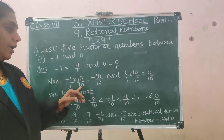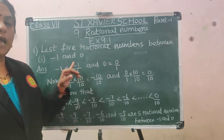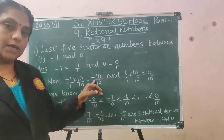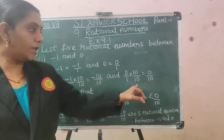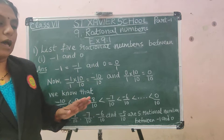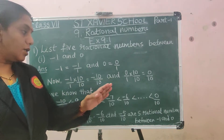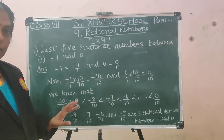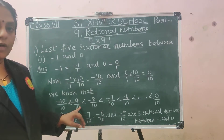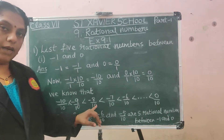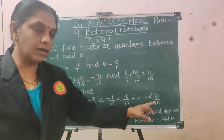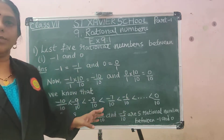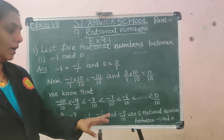We multiply both the numerator and denominator by 10, giving minus 10 by 10 and 0 by 10. Now write numbers between 0 and minus 10: minus 9 by 10 becomes 0.9, then minus 8 by 10, minus 7 by 10, etc., up to 0 by 10. Any 5 of these — between minus 10 and 0 — are the 5 rational numbers between minus 1 and 0.